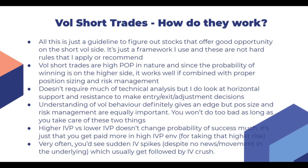Higher IVP or lower IVP doesn't change the probability of success much. It's just that when you put on trades in higher IVP you receive higher credit upfront and get paid more if you are right, but you are also taking higher risk. Very often you will see sudden IV spikes despite no news or movement in the underlying, which usually get followed by an IV crash. If I see such a spike in any underlying without any news or stock movement, I usually take vol short trades in those.